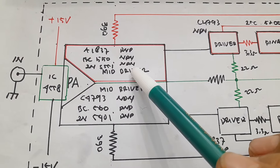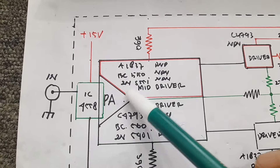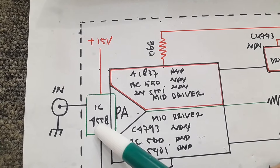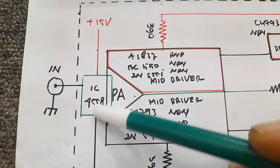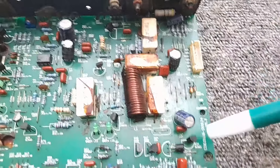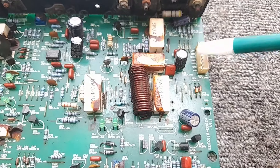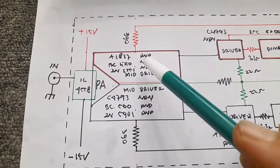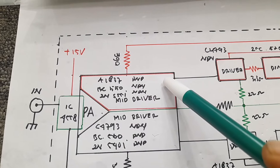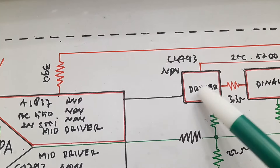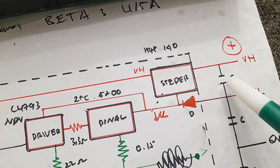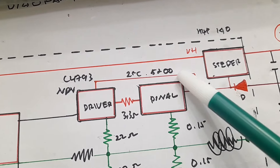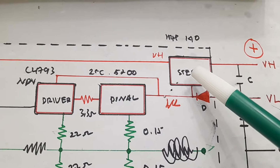Dari penguat driver ini, nanti ada bagian penguat awal yang dikuatkan lagi menggunakan IC 4558, tegangannya plus 15V dan min 15V, ground, jadi tegangan simetris DC. Dari penguat driver ini nanti masuk ke bagian transistor driver, tegangannya low dari power supply, dari output stepper-nya.